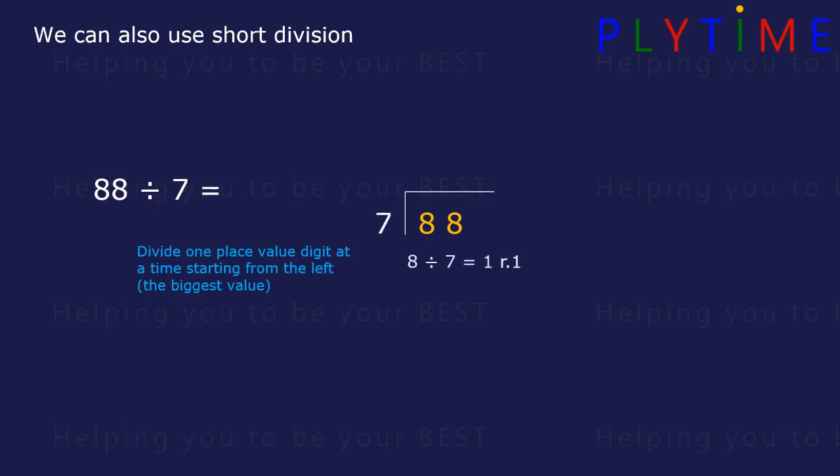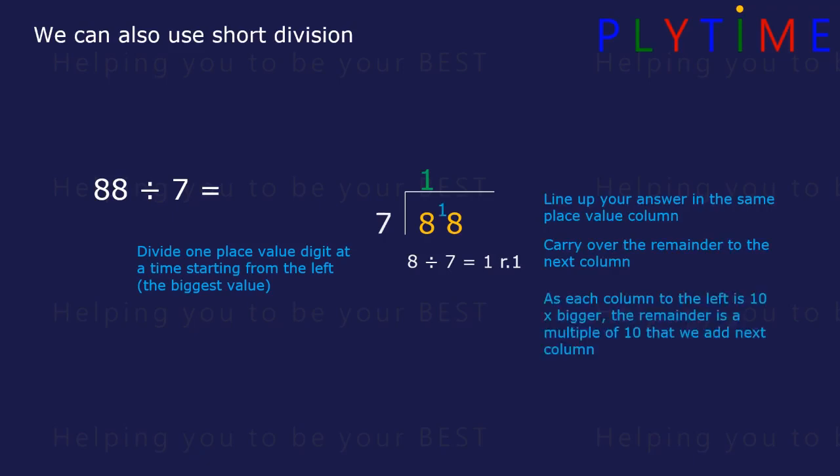8 divided by 7 is 1, with a remainder of 1, and we line up our answer in the same place value column. We carry over the remainder to the next column. As each column to the left is 10 times bigger, the remainder is a multiple of 10 that we can add to the column. So 8 becomes 18.